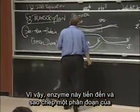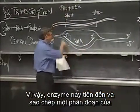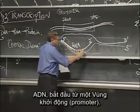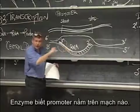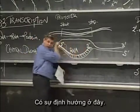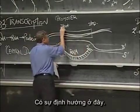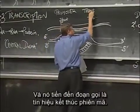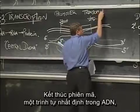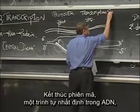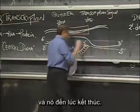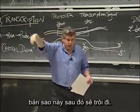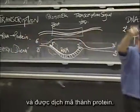So this enzyme comes along and it copies a segment of the DNA starting at a promoter. It knows which strand it's on — this is double-stranded, it has a directionality to it. And it reaches what's called a transcriptional stop signal, which is a certain sequence in the DNA. And it comes to an end, and it makes an RNA transcript, which then floats away, which next time we'll talk about getting translated into a protein.